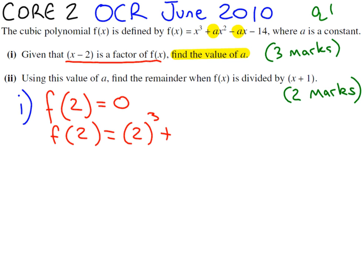Obviously we don't know a yet, so we're going to leave that as a. And we can simplify this to 8 plus 4a minus 2a, and don't forget minus 14.